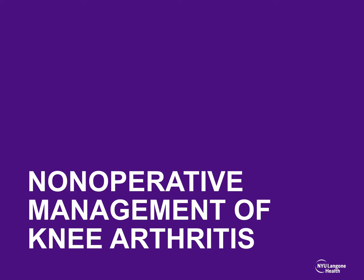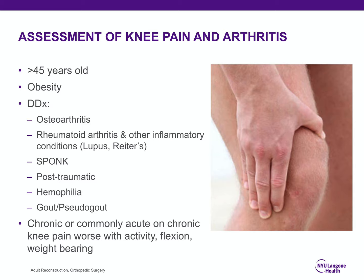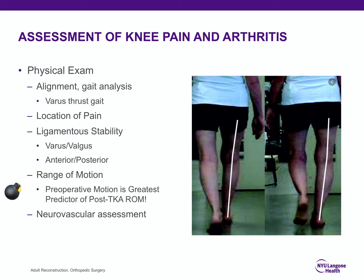When assessing patients with knee arthritis, on the test they're generally greater than 45 years old, obesity is prevalent, and you should work through a differential: osteoarthritis, rheumatoid or other inflammatory arthropathies, spontaneous osteonecrosis of the knee (SONK), post-traumatic deformity from a tibial plateau fracture, hemophilia, or concomitant gout or pseudogout. These patients typically present with chronic or acute-on-chronic pain worse with activity, flexion, and weight bearing.